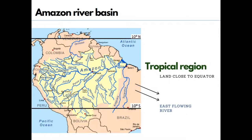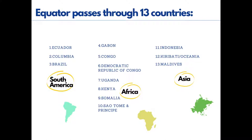Many tributaries join the Amazon River, thus forming the Amazon basin. When a river flows into another body of water, that point is called the mouth of the river. The small contributing rivers that join a larger river are called tributaries. A large river along with all of its tributaries draining an area is referred to as a river basin, which can also be called a catchment area.